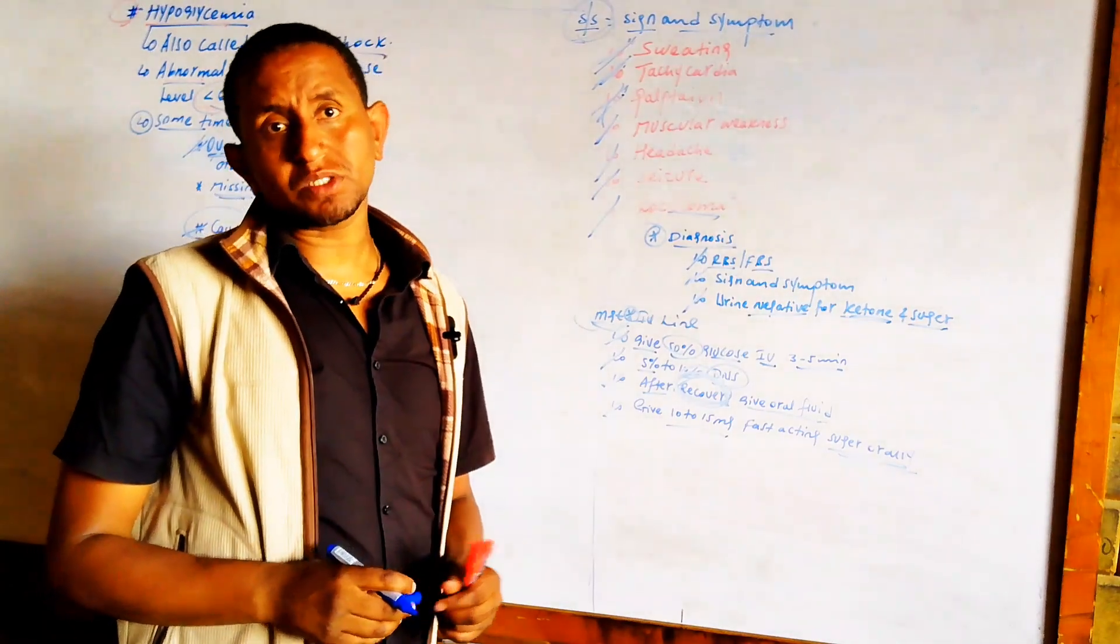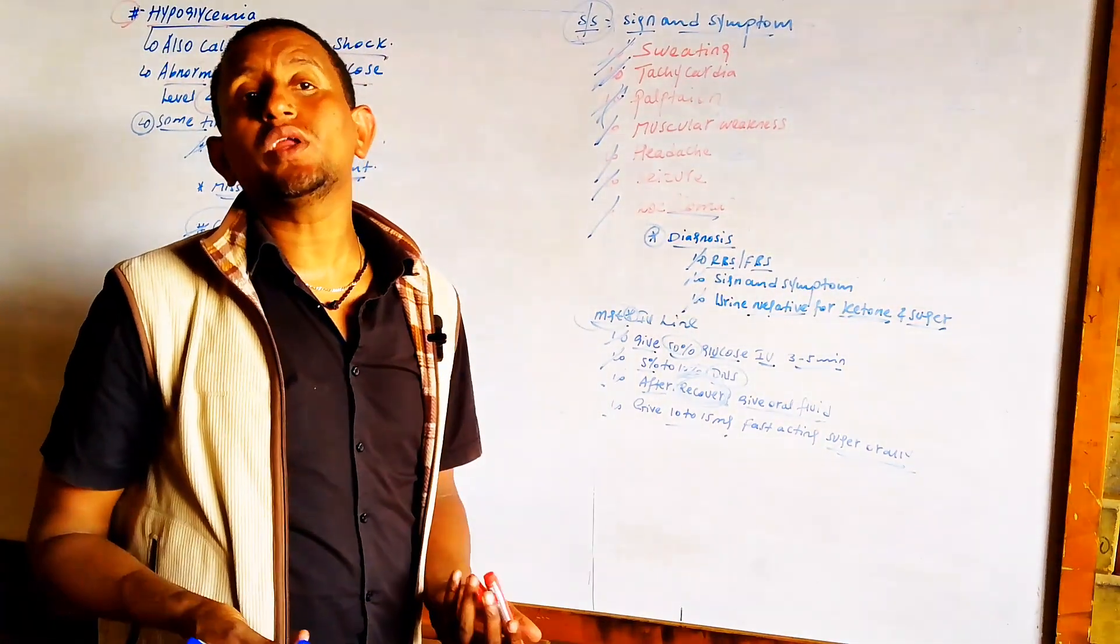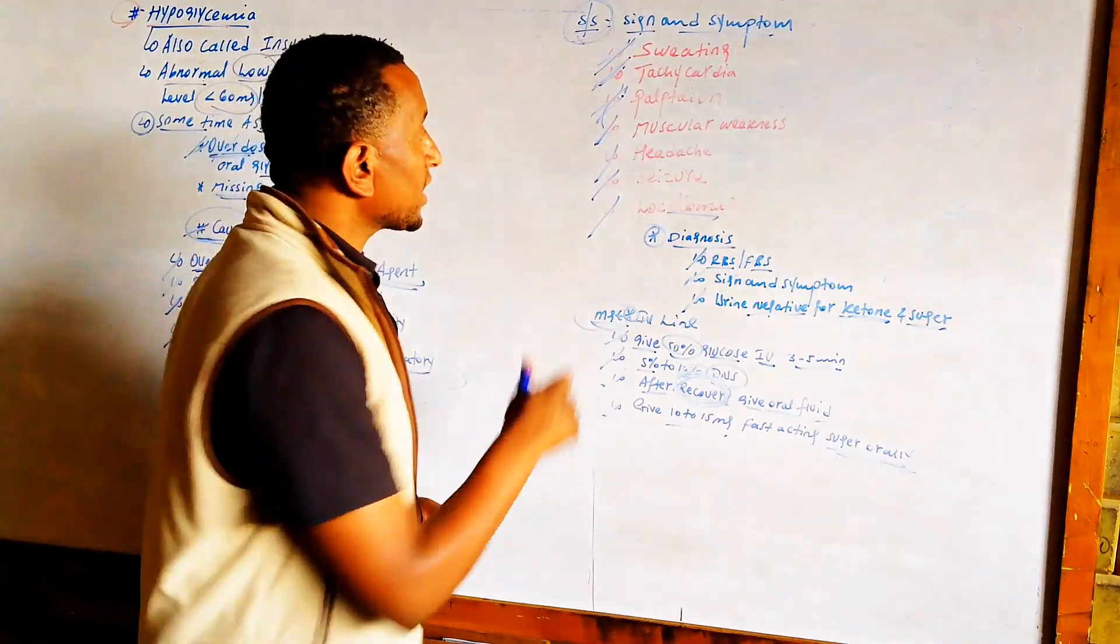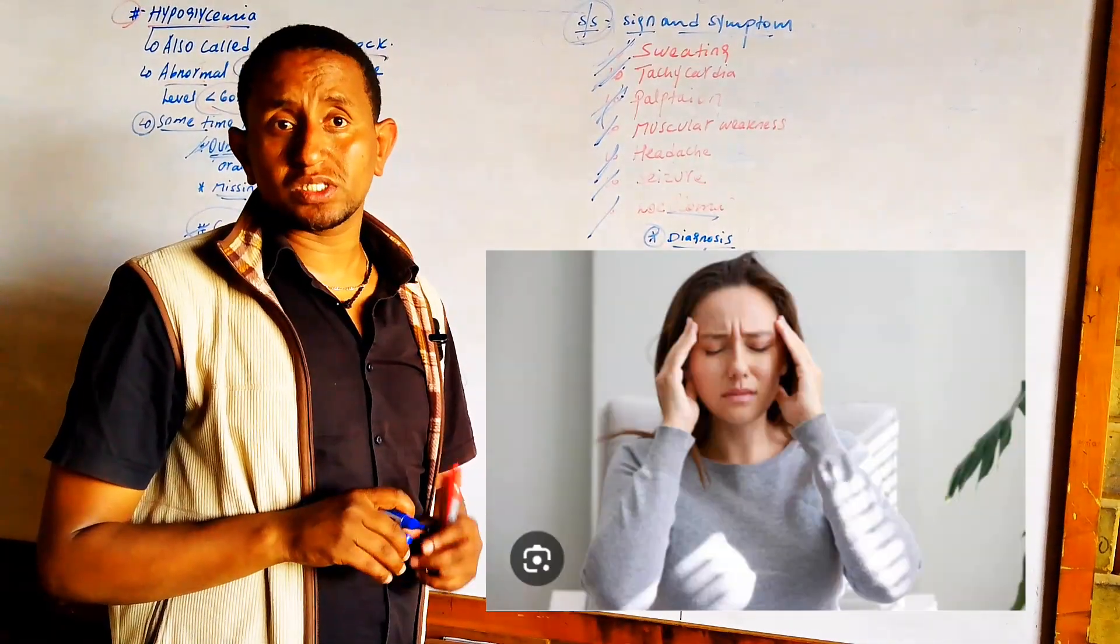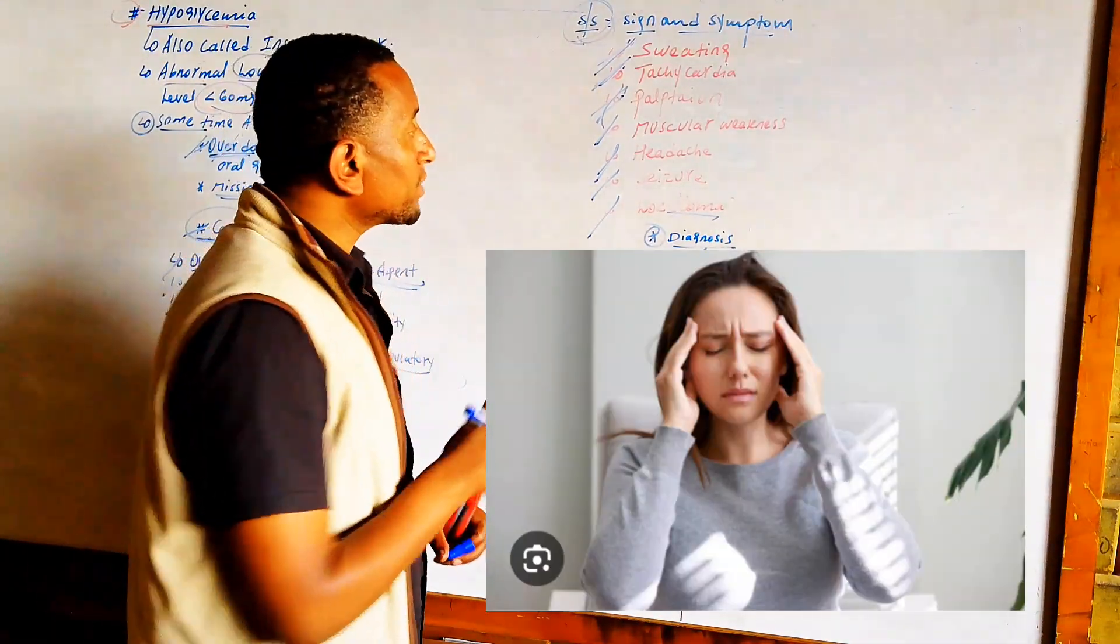The fourth symptom is muscular weakness. No glucose means no energy, so the muscles become weak. The patient will also develop frontal headache due to decreased glucose content in the brain cells.